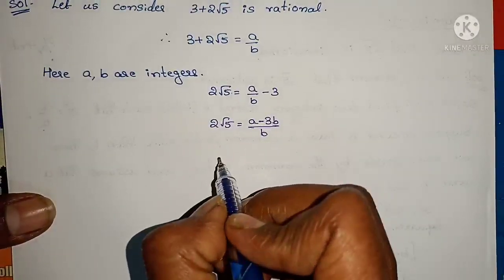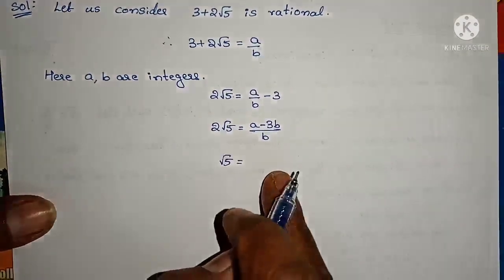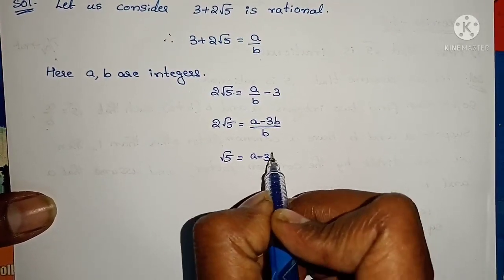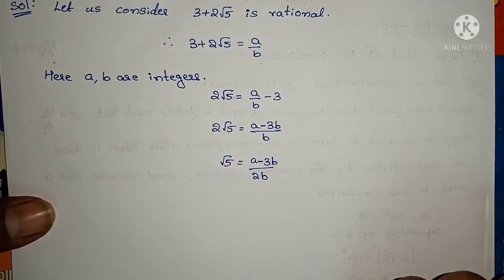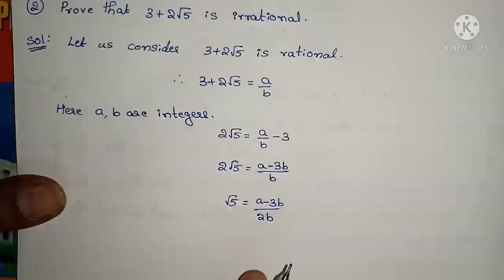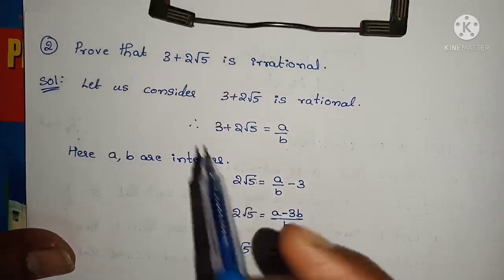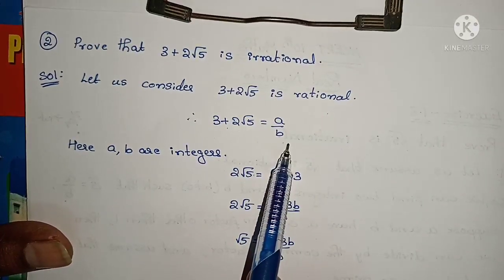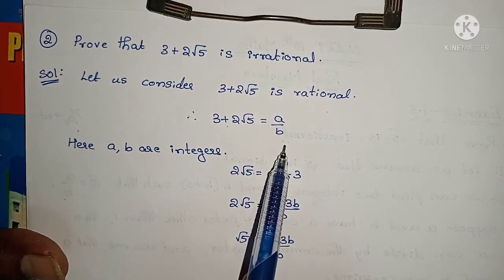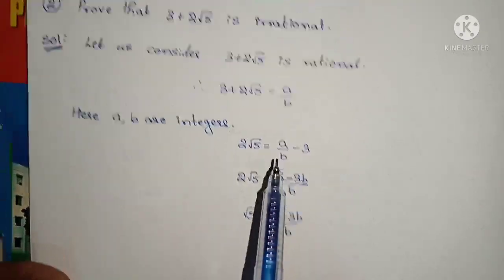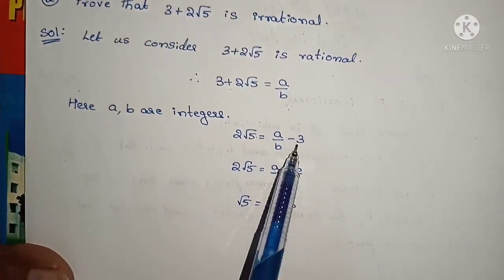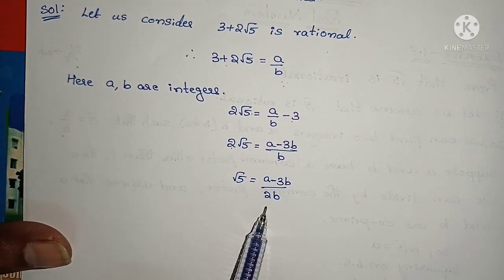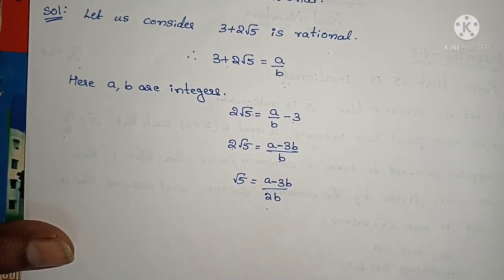Now isolating root 5: since 2 is multiplying, sending it to the other side gives division, so root 5 = (a − 3b) / 2b. Since a and b are integers, a − 3b by 2b is in the form p by q, so a − 3b by 2b is a rational number. Therefore root 5 would also be rational.